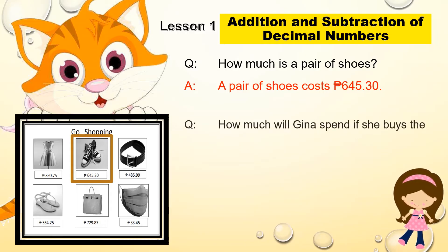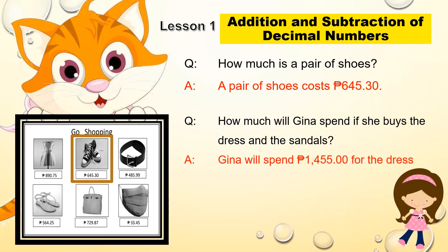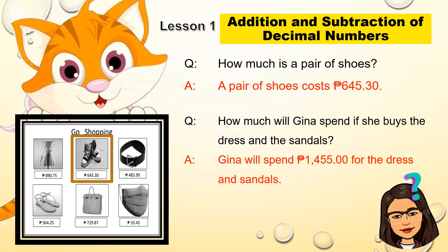Now here is another question: how much will Gina spend if she buys the dress and the sandals? Let me tell you the answer ahead, and I want you to wonder how I got it. The answer is that Gina will spend 1,455 pesos for the dress and sandals. But how did I get the answer?